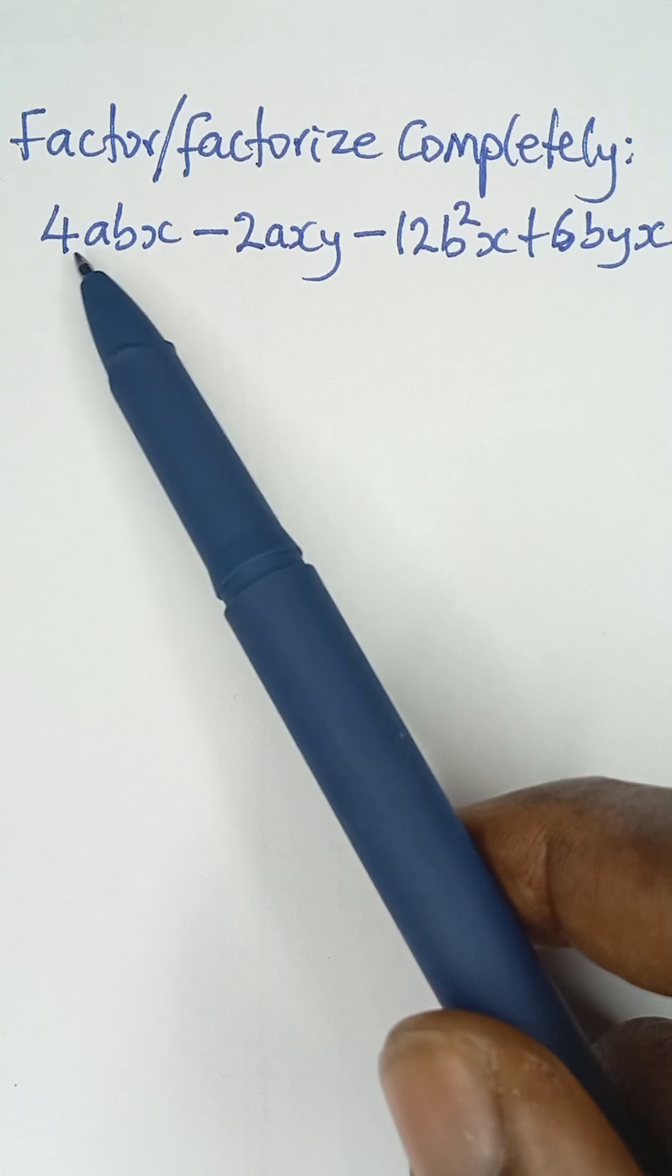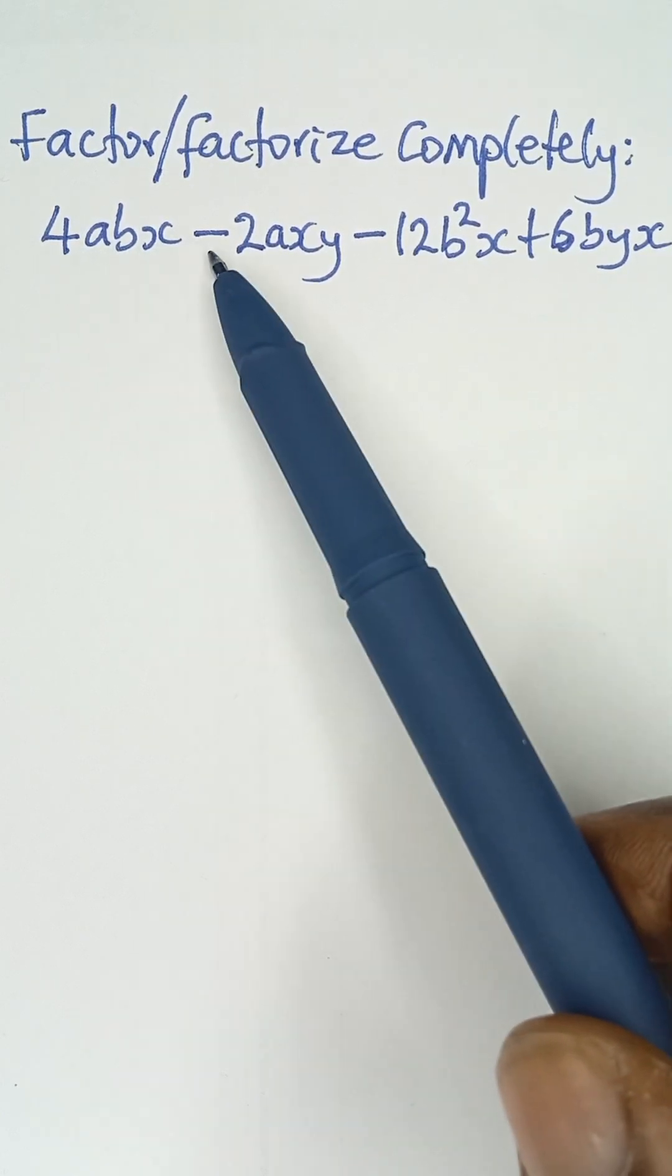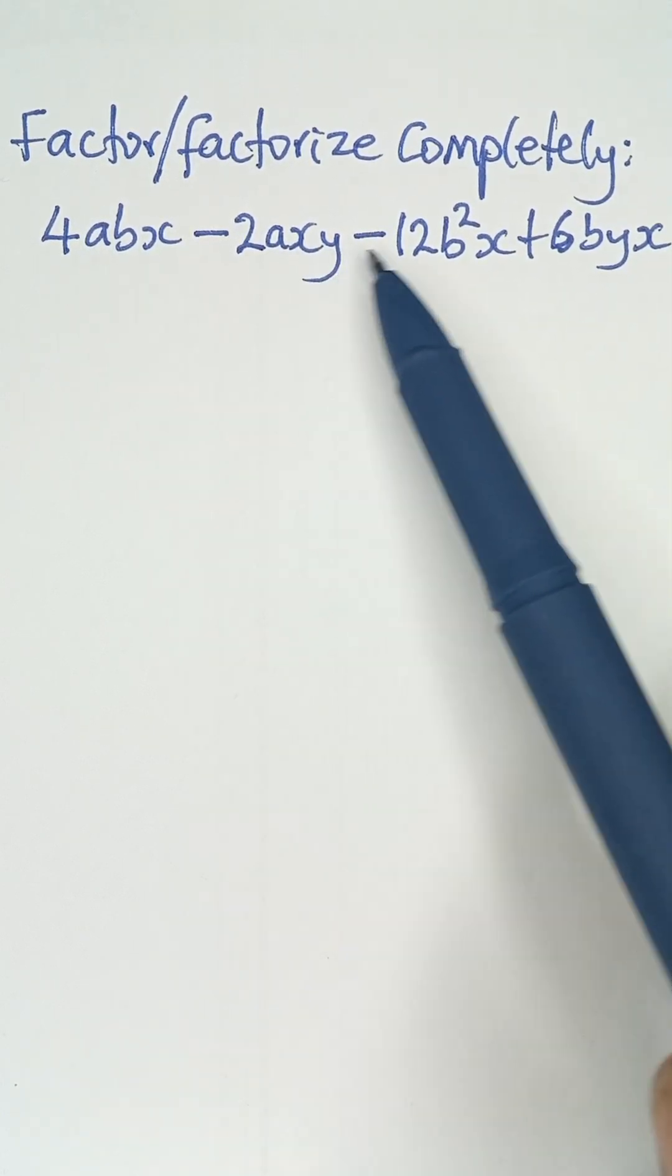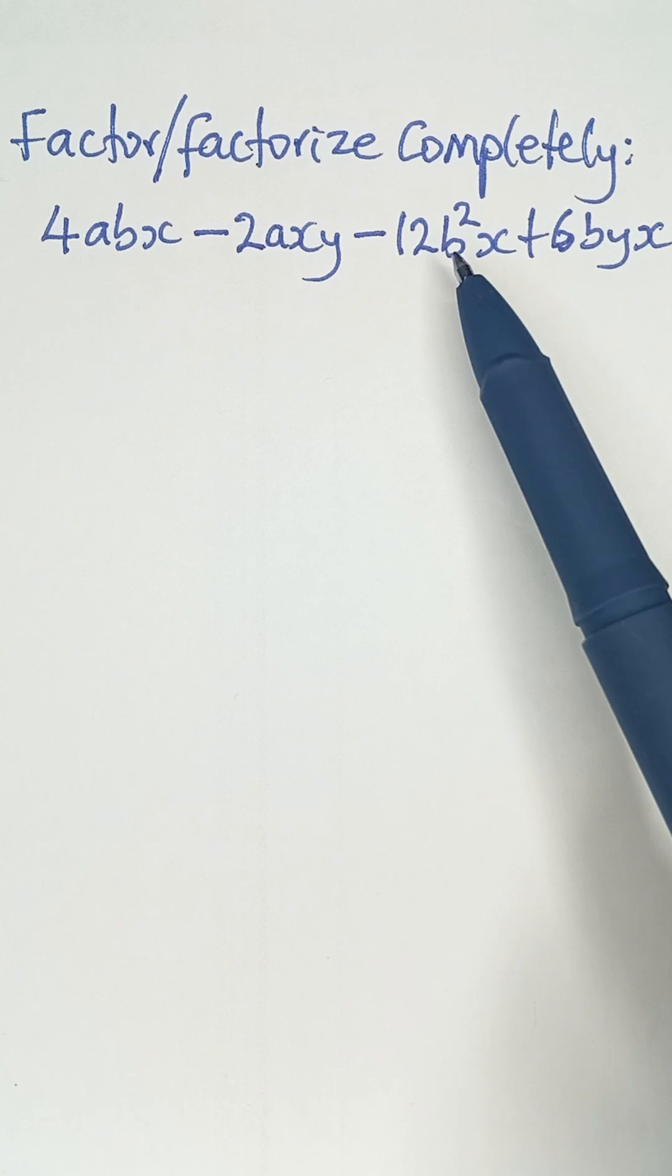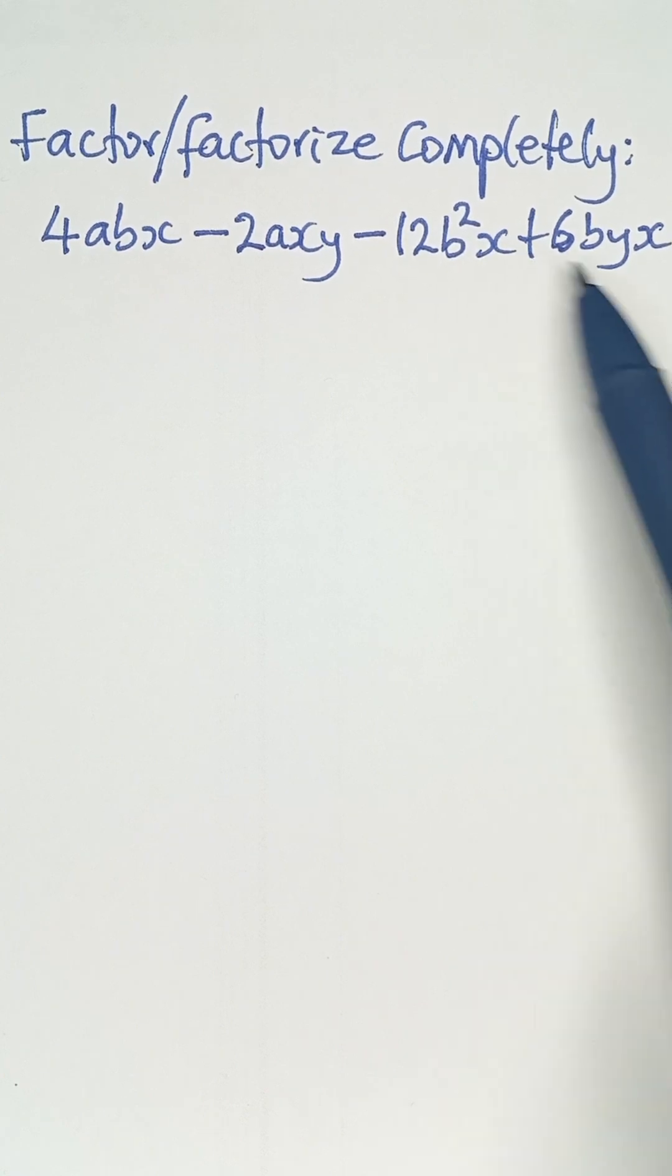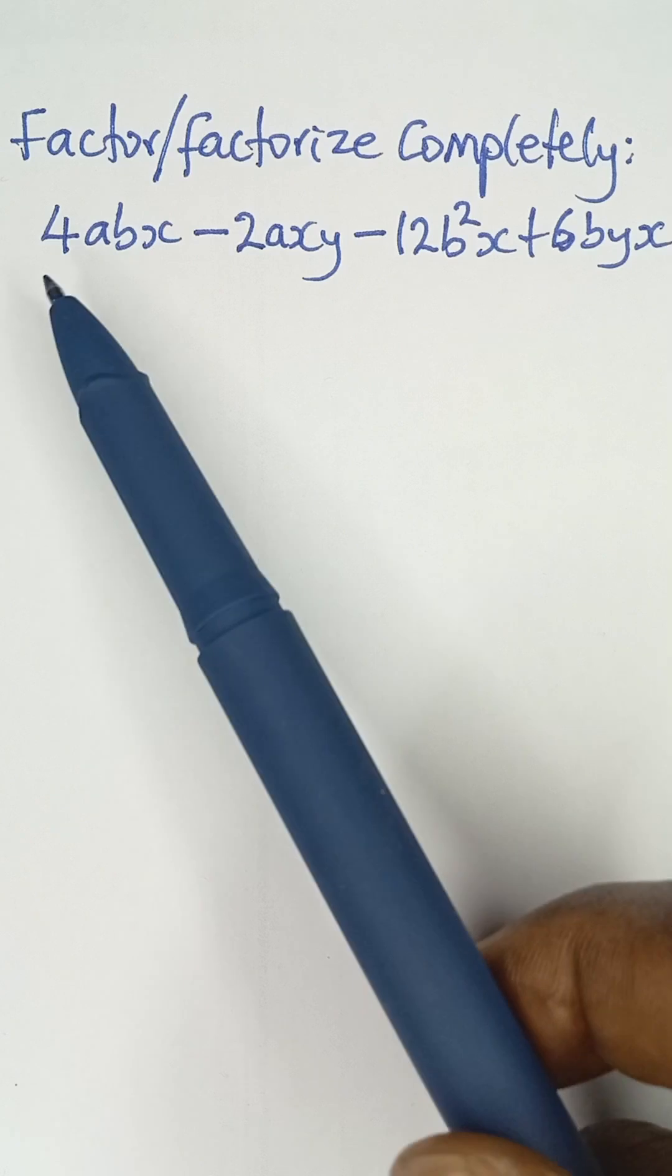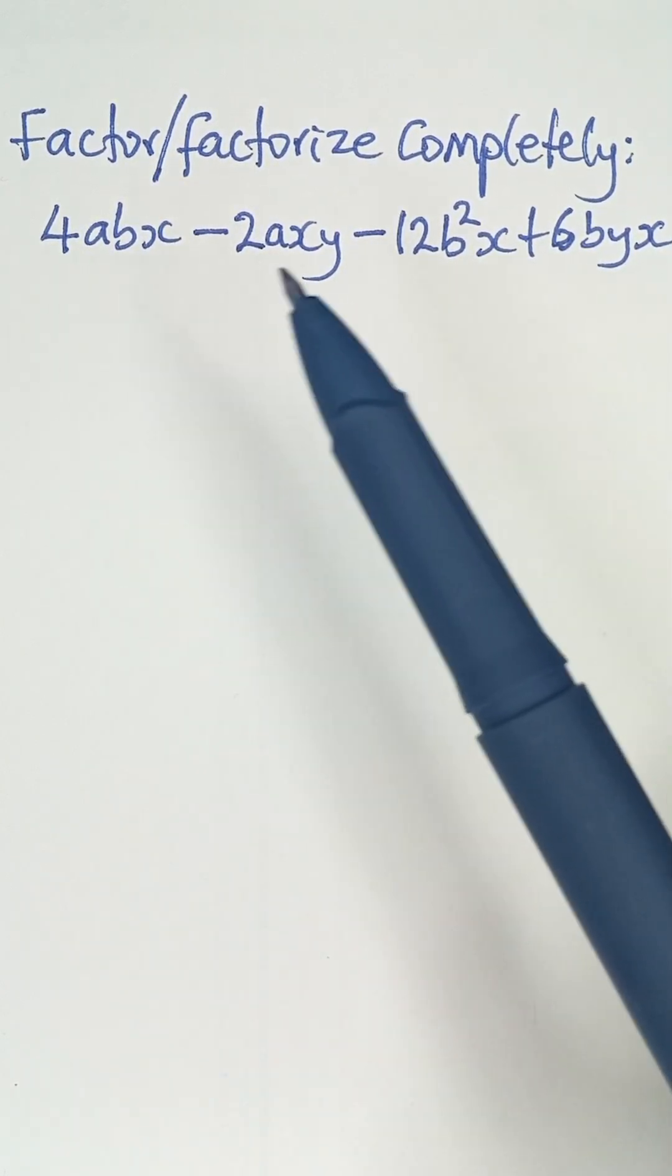Factor or factorize completely 4abx minus 2axy minus 12b²x plus 6byx. Now, if we look at all the terms there, there's something that is common to them.